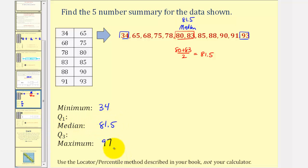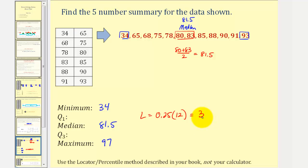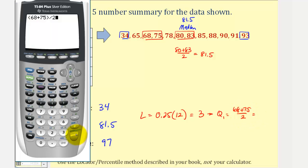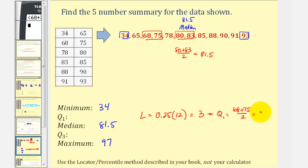Next, using the locator method, we'll find Q1 and Q3. We begin by determining L equals 0.25 times N for Q1. N is 12. Notice here, this gives us three. Because L is a whole number, we use the average of the values in the third and fourth positions for Q1. So Q1 is going to be equal to the values in the third and fourth positions which would be 68 and 75. So 68 plus 75 divided by 2 gives us 71.5 for Q1.